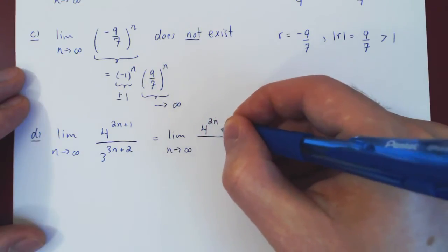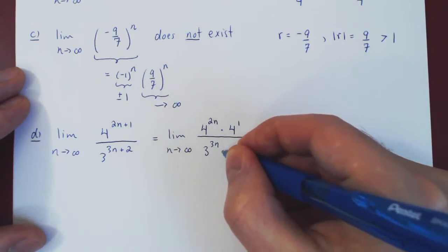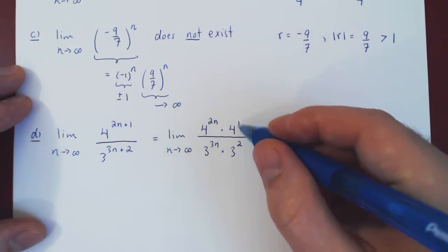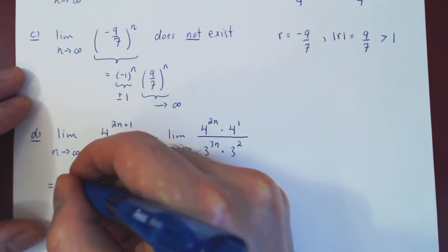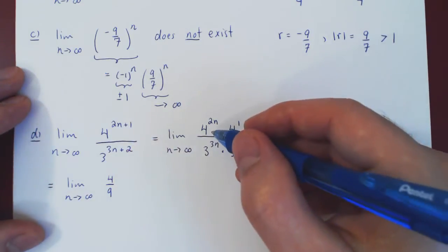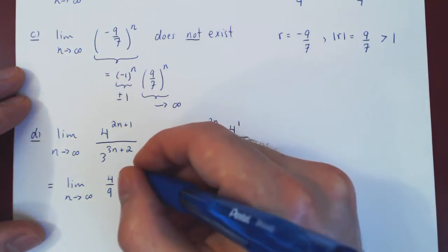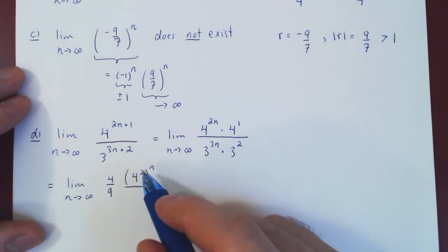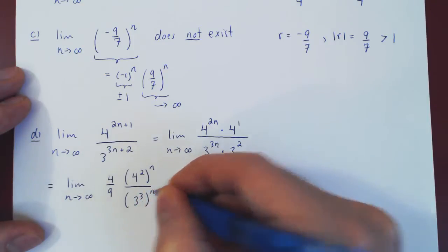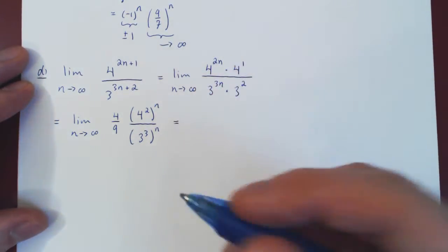We split this as 4 to the 2n times 4 to the 1, over 3 to the 3n times 3 squared — when multiplying the same base, we add the exponents. The constant factors 4 over 9 squared can be factored out. Then using the property of double exponentiation: 4 to the 2n is simply 4 squared to the n, and 3 to the 3n is 3 cubed to the n, since when you double exponentiate you multiply the exponents. With one final step, we retrieve a geometric sequence.